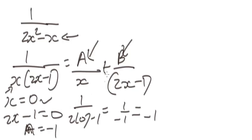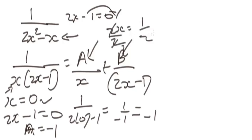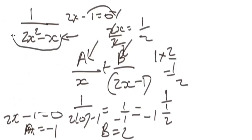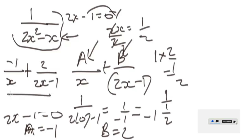For B, we set two x minus one equal to zero, giving x equals one half. We substitute one half into the expression but not into the two x minus one factor. So we get one over one half, which equals two. So B equals two. Therefore, the partial fraction of this expression is negative one over x plus two over two x minus one.